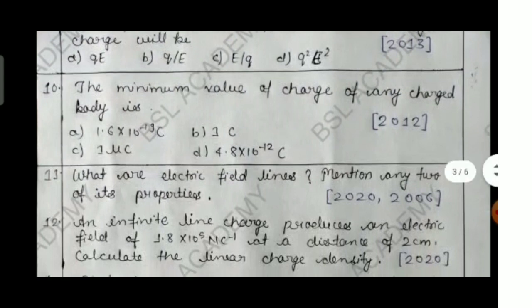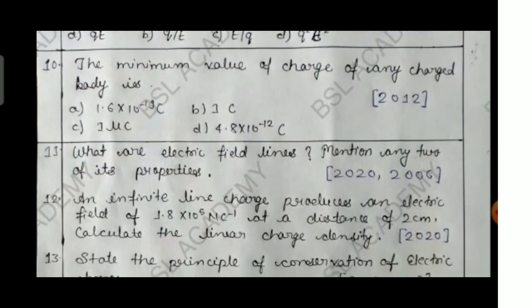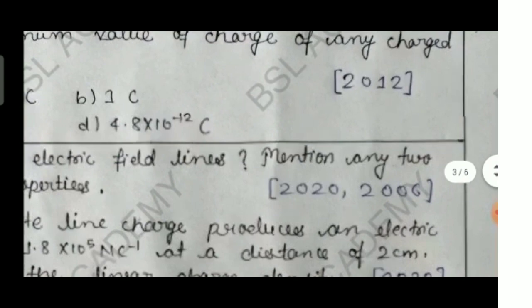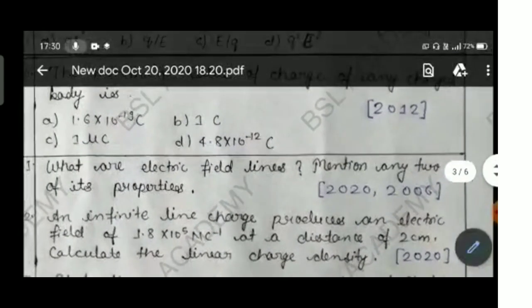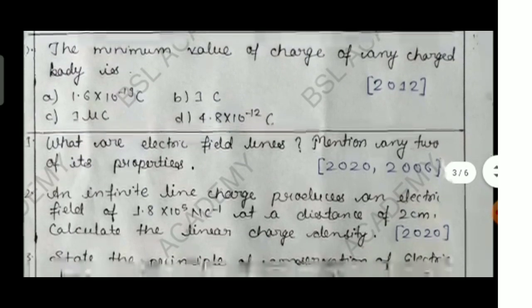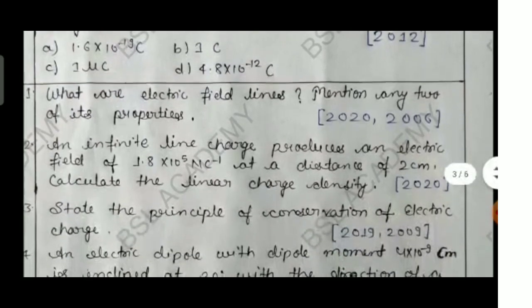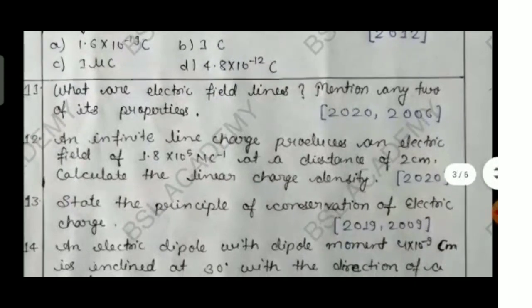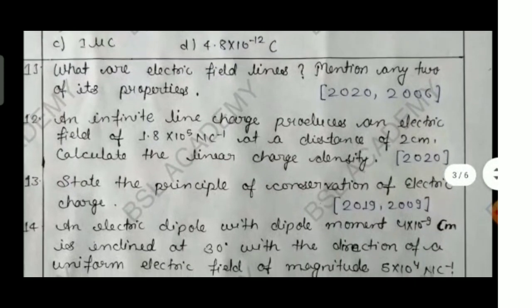Question number ten: the minimum value of charge on any charged body is — option A: 1.6×10⁻¹⁹ coulomb, option B: 1 coulomb, option C: 1 microcoulomb, option D: 4.8×10⁻¹² coulomb. This is from 2012. Please answer it. Now let's move on to short answer type and long answer type questions.